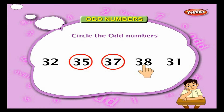38 ends with eight — this is not an odd number. 31 ends with one, so it is an odd number — circle it.